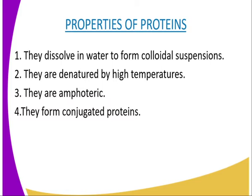The second property is that proteins are denatured by high temperatures above 40 degrees Celsius and extreme pH values. Denaturing changes the structure of the protein molecules, causing a change in the chemical and physical properties of proteins. This affects their physiological activities in the tissues.